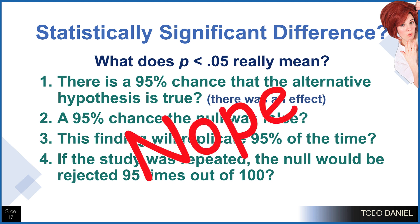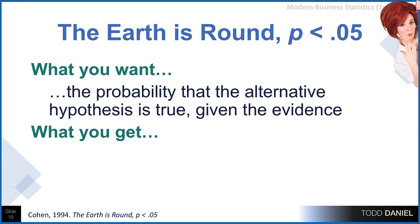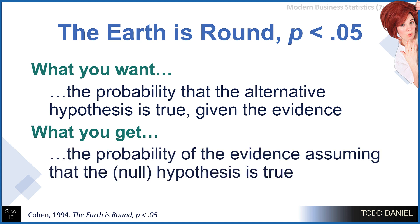It is not. What does statistical significance really mean? What you want when you do hypothesis testing is to know the probability that the alternative hypothesis is true, that there really was an effect, given the evidence. But what hypothesis testing gives us is the probability that we would find this evidence if the null hypothesis was true.